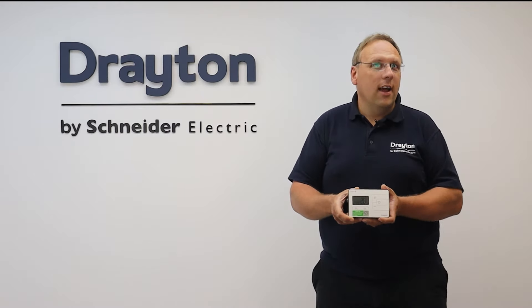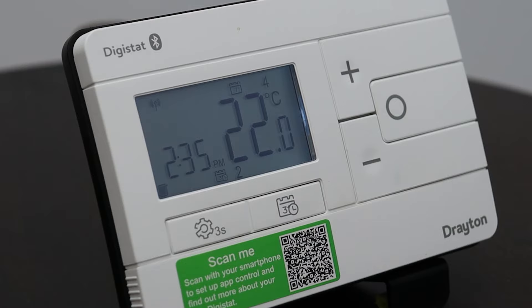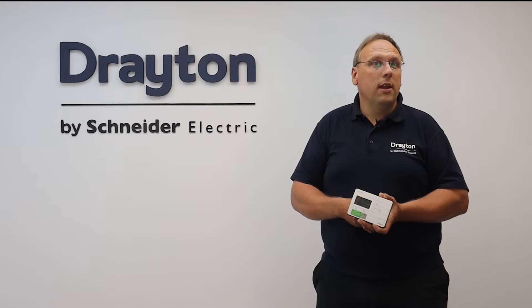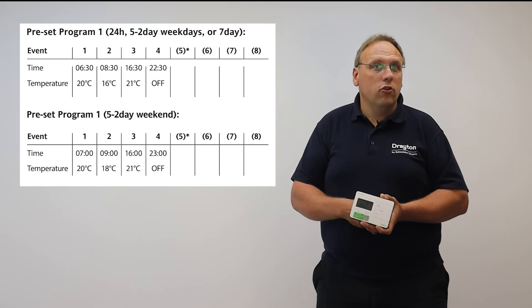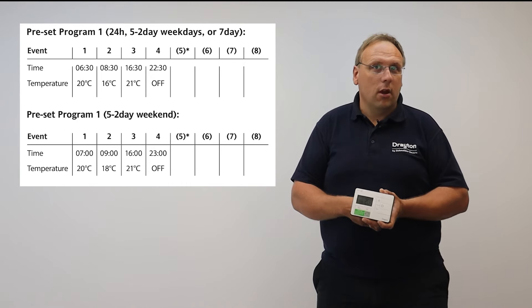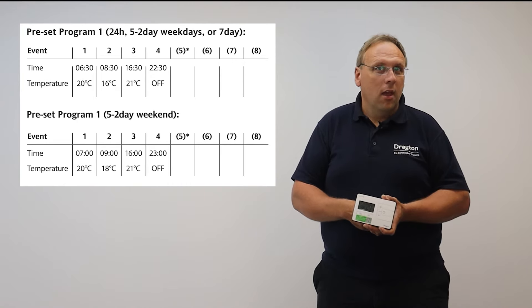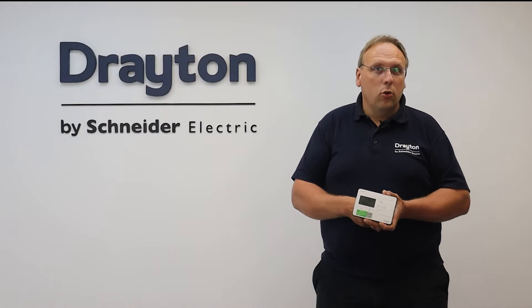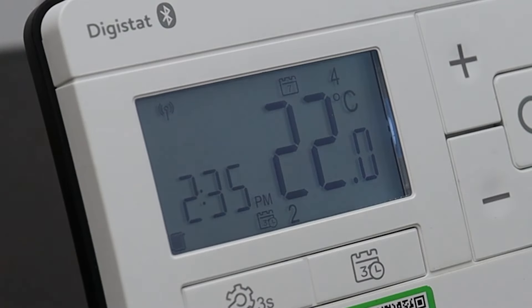When the Digistat is first installed it comes set to Auto mode by default, which means that it will follow a schedule for different temperatures at different times throughout the day. When set to Auto, the icon on the bottom edge of the screen looks like a calendar.